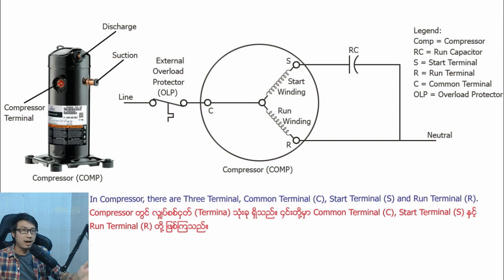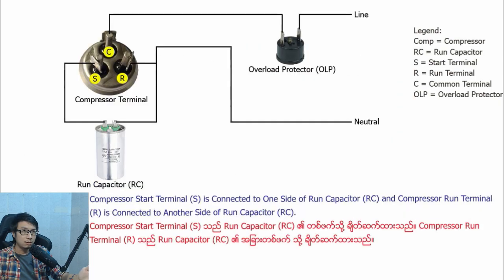There are three terminals: common terminal C, start terminal S, and run terminal R. Compressor start terminal S is connected to one side of the run capacitor, and compressor run terminal R is connected to the other side of the run capacitor.